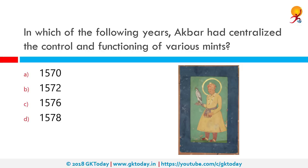In which of the following years did Akbar centralize the control and functioning of various means? The correct answer is 1570. Akbar was central to all power in his administration — civil, judicial, military and religious. He was the supreme commander of the army and established a centralized administration. All appointments, promotions or dismissals depended on his decisions and orders. Usually, he ruled according to Shariat or Islamic law.